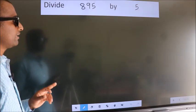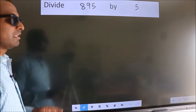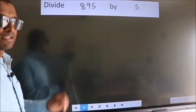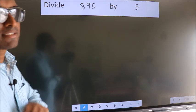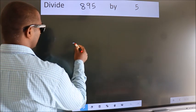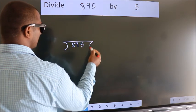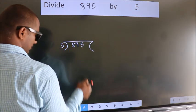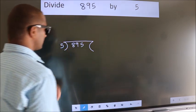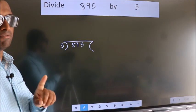Divide 895 by 5. To do this division, we should frame it in this way. 895 here, 5 here. This is your step 1.